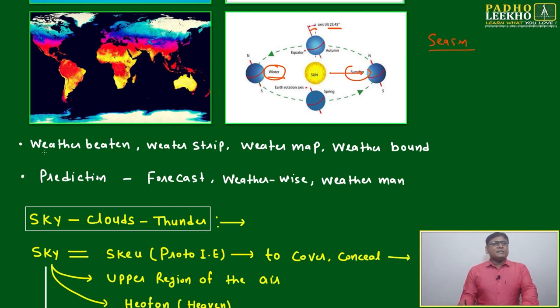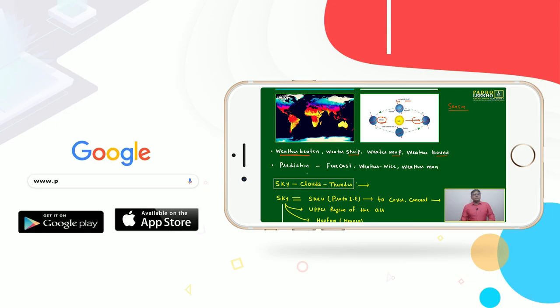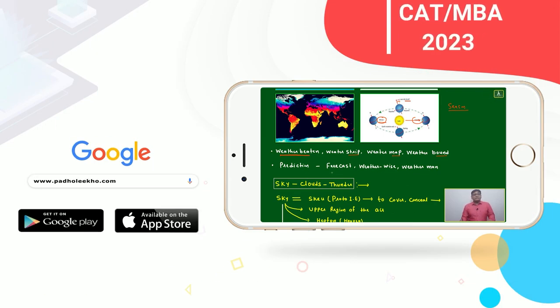Now we'll come to weather-beaten. Weather-beaten means someone who has crossed all the paths - first rainy season has come, wetted, dried, crossed all the process of nature. That is called weather-beaten, weather strip, weather map, weather bond. And prediction related to weather is called forecast, or weather-wise.